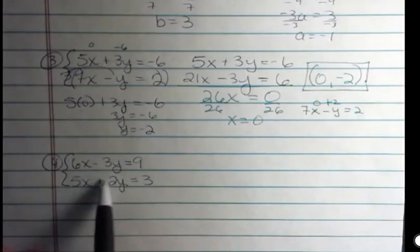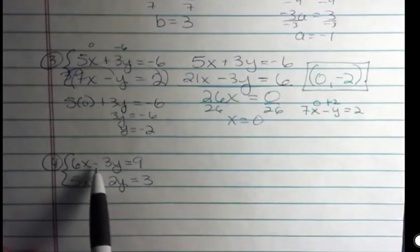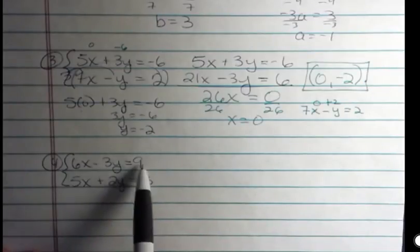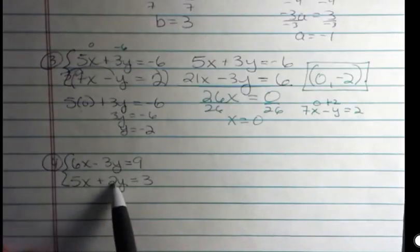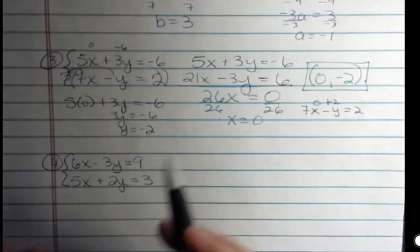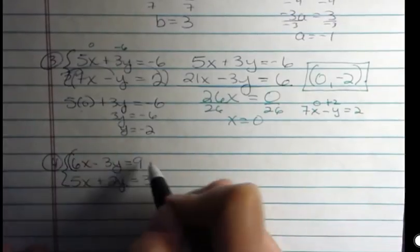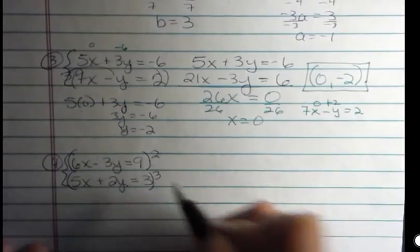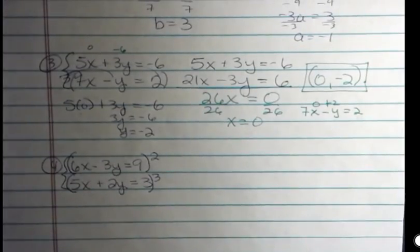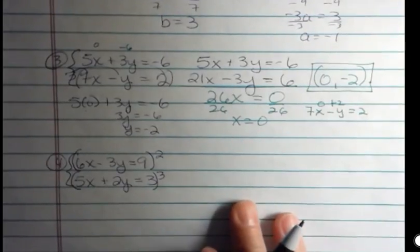Since I have the middle terms here, the y terms, negative and positive, I'm going to work on those. So what I'm interested in, what could I multiply the top equation by and the bottom equation by to make me have opposites? And I can see that 2 and 3 both go into 6. So I'm going to multiply the top equation by 2 and the bottom equation by 3. Remember, you can multiply an equation by whatever you want as long as you do it to all terms. So this is perfectly legal.